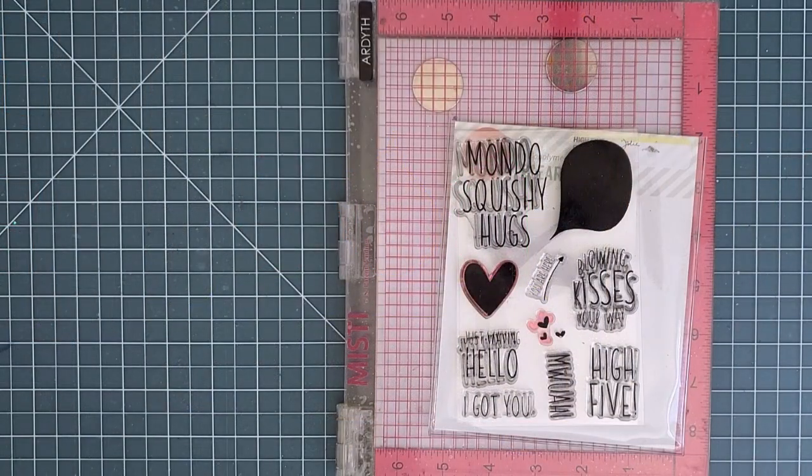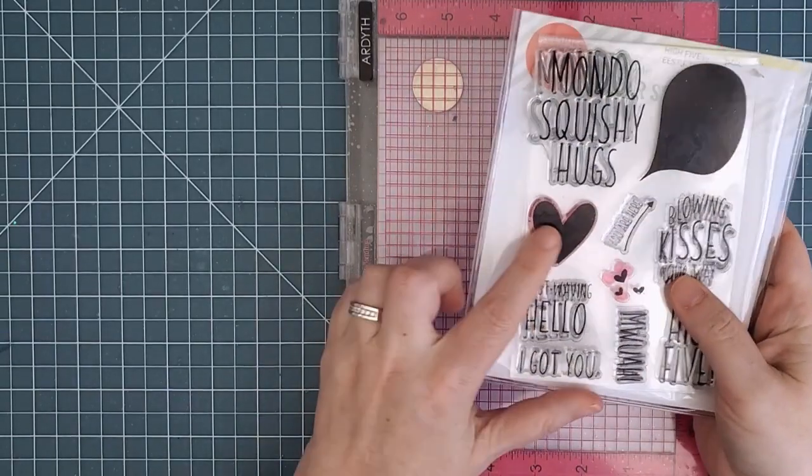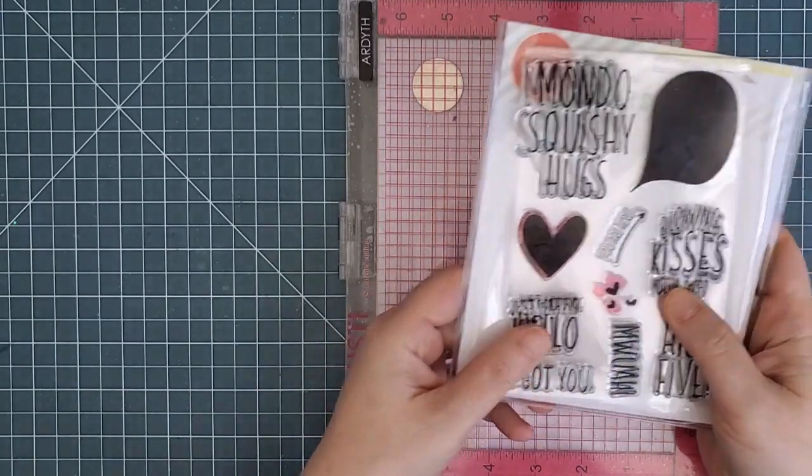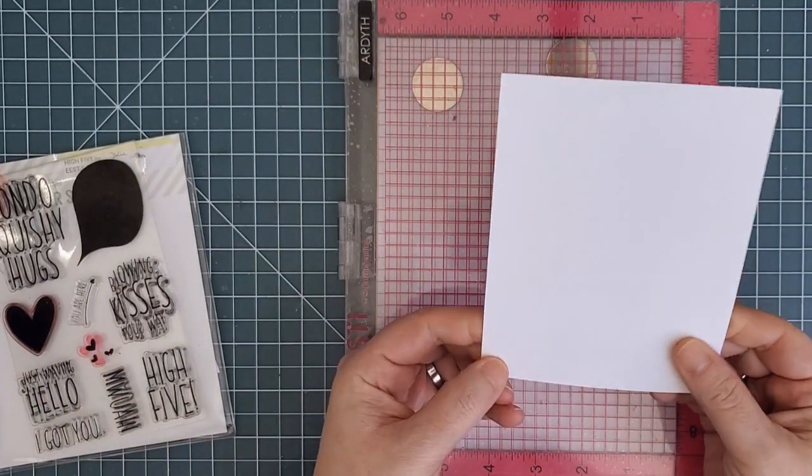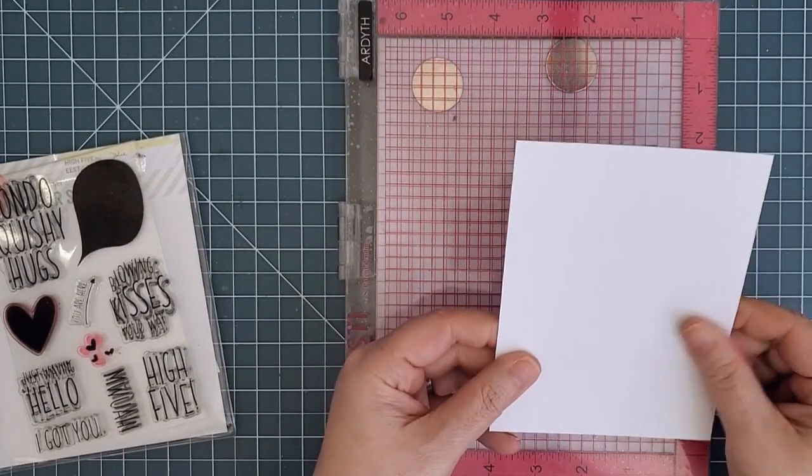I'm going to use the solid heart stamp from the Essentials by Ellen Hi5 set, which has a bunch of really fabulous sentiments for cards to send to people you're missing right now, even though it was released a little while ago.